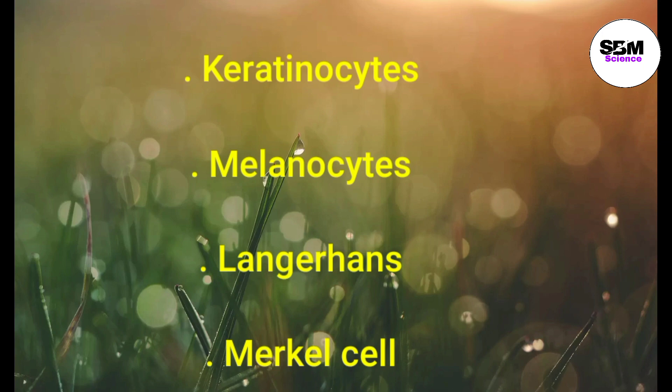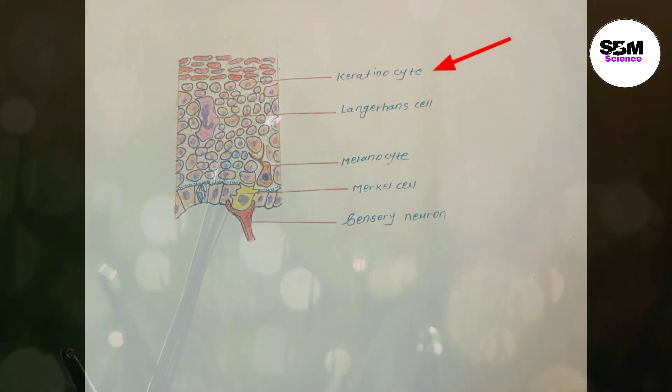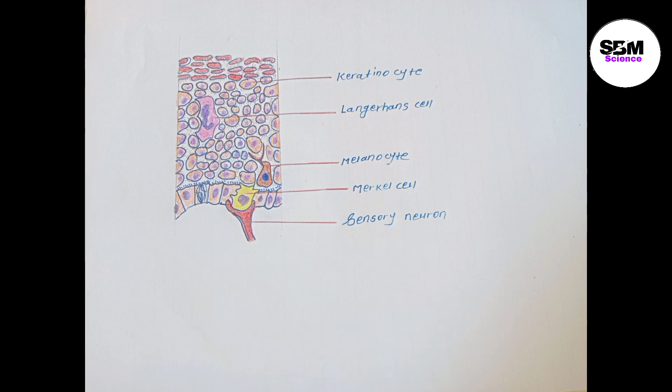The cells in the epidermis are keratinocytes, melanocytes, Langerhans cells, and Merkel cells. Keratinocytes are the most common type of cells in the epidermis and are responsible for synthesizing the protein keratin. The primary function of keratinocytes is the formation of barriers against environmental damage by heat, UV radiation, water loss, pathogenic bacteria, and viruses.